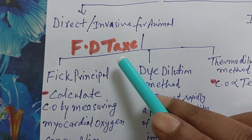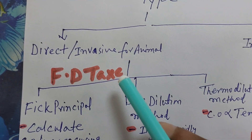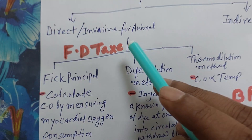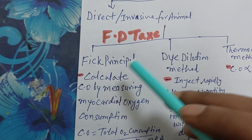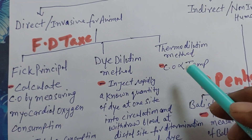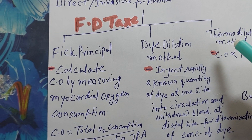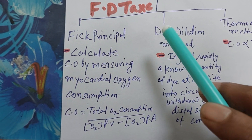How do you remember these? By three mnemonics — FD tags, meaning Fixed Deposit tags. F stands for Fick principle, D stands for dye dilution method, and T stands for thermodilution method.